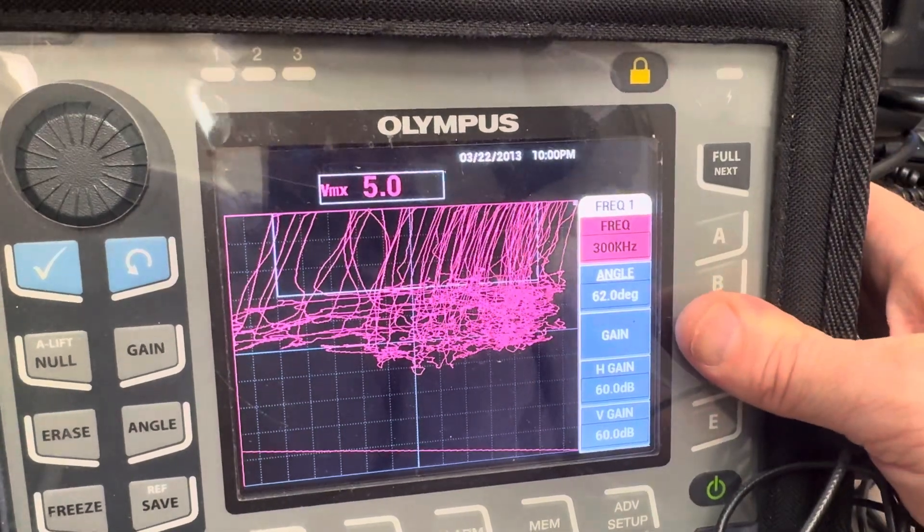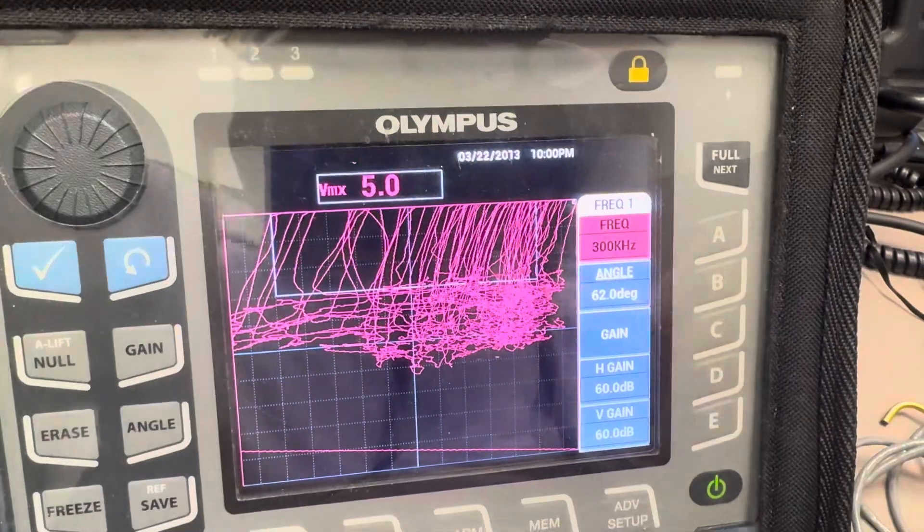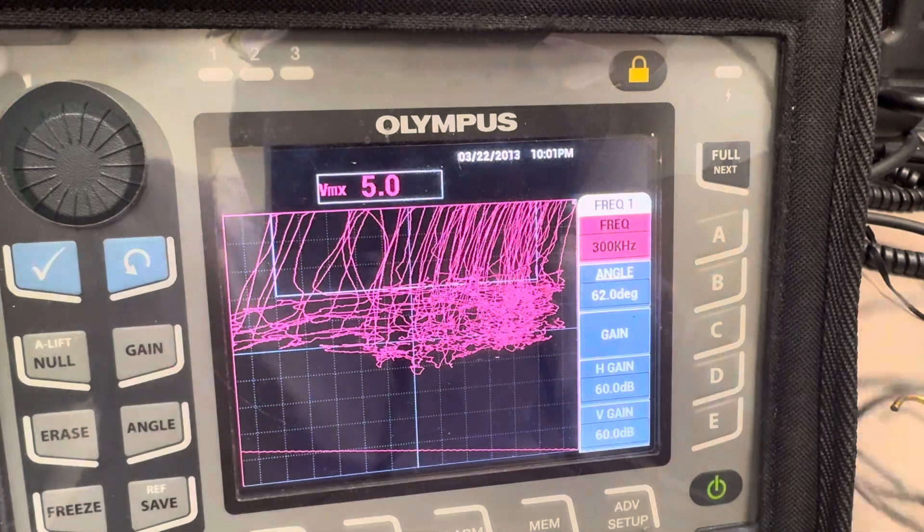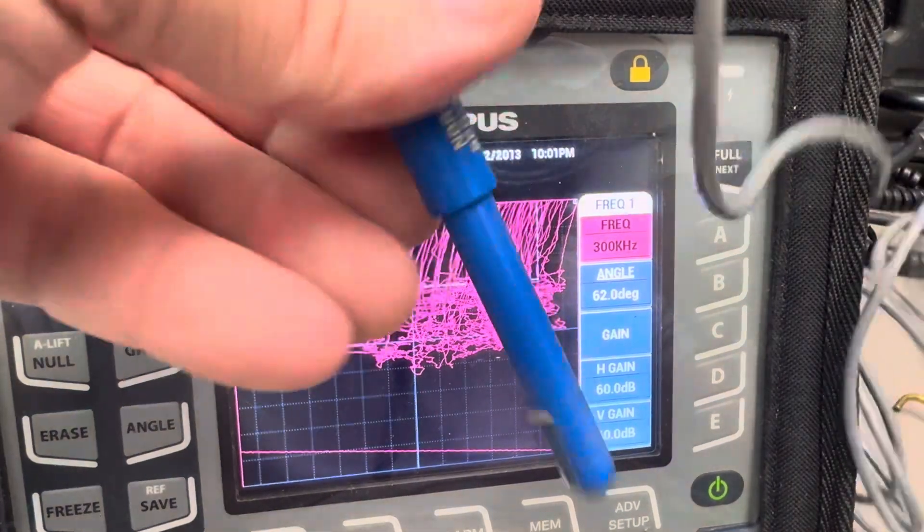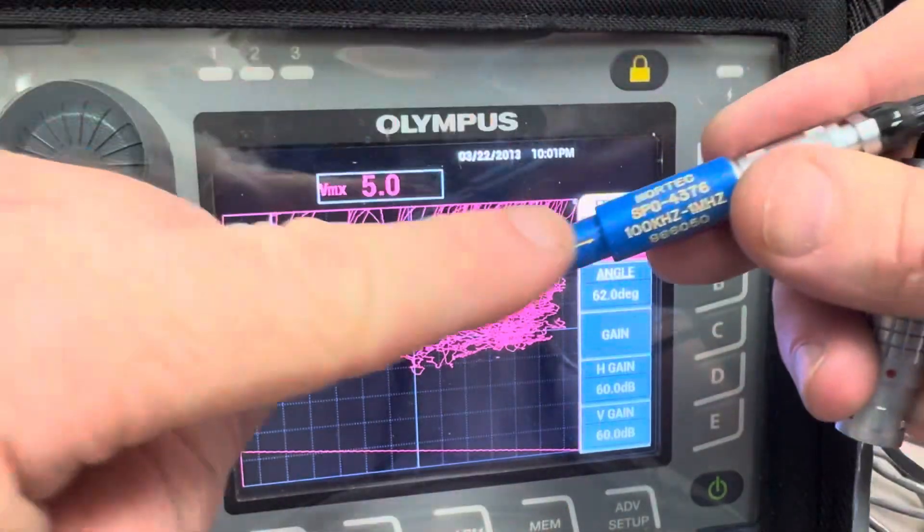Now on this other one, this is one that you would use more for weld scanning and also it has this line on the probe.